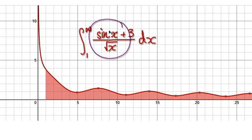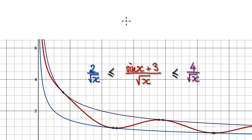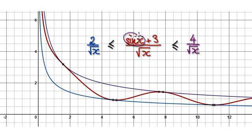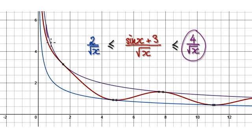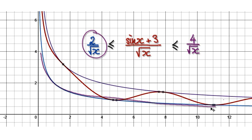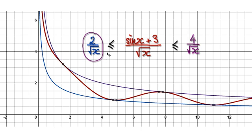So this area here is trapped in between here and in between here. The trick is to realize that sine of x is trapped between negative 1 and 1. The highest value gives 1 plus 3 equals 4, and the lowest gives negative 1 plus 3 equals 2. On the graph, the red line represents the upper bound, and the purple line represents the lower bound, with the blue line representing the original function.